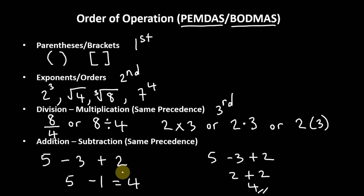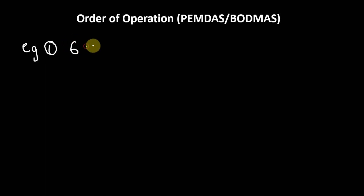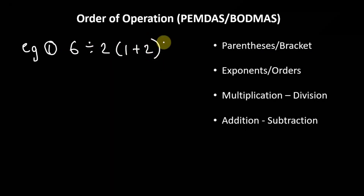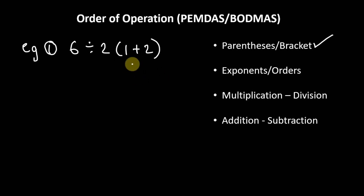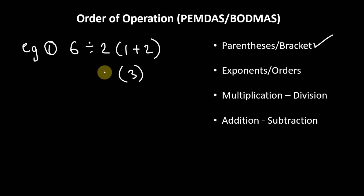Let's look at some examples of how to apply these rules. Example 1: 6 divided by 2 with 1 plus 2 in brackets. In solving these problems we must observe the order of operations. The first thing we look for is parentheses or brackets — and here we have a bracket. So we simplify what's in the bracket: 1 plus 2 is 3. We then carry down the 2, the division sign, and the 6.